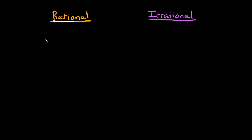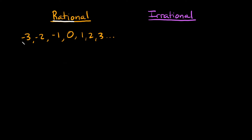Let me give you some examples. First, a rational number can be just an integer — a whole number, positive or negative. So we have 0, 1, 2, 3, and so on, but it also includes all the negative numbers: negative 1, negative 2, negative 3, and so on. All these numbers are considered rational numbers.